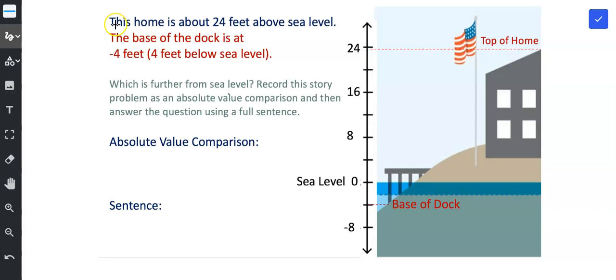So this problem reads: this home is about 24 feet above sea level. So here's the top of the home and it's about 24 feet above sea level. The base of the dock is at negative 4 feet, so 4 feet below sea level. So there's the base of the dock.